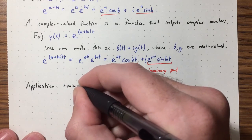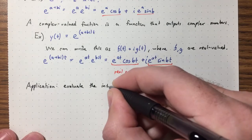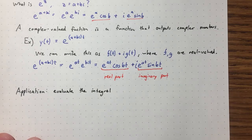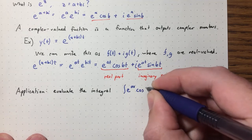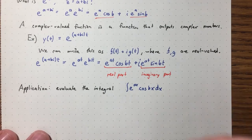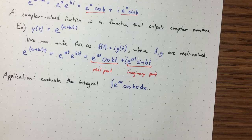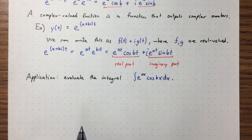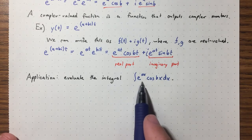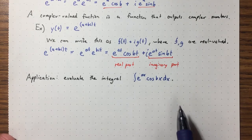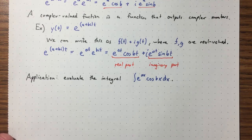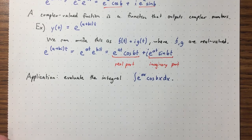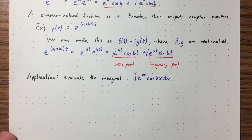Here's a cool application: evaluate ∫e^(ax)cos(bx)dx. The usual approach is integration by parts twice, ending up back where you started, then solving algebraically. But there's a better way using complex numbers.